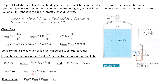Substituting and setting pressure at A equal to pressure at B: P_air plus P_oil equals P_atmosphere plus P_mercury. Rearranging to solve for the pressure of air: P_air equals P_atmosphere plus P_mercury minus P_oil.